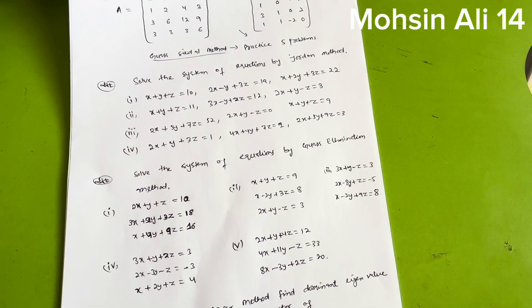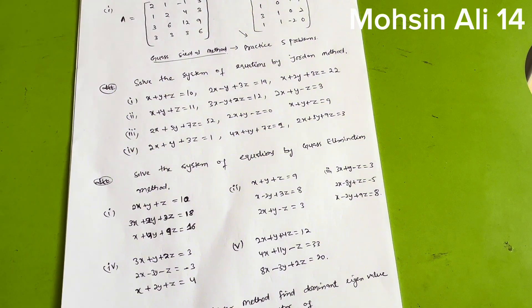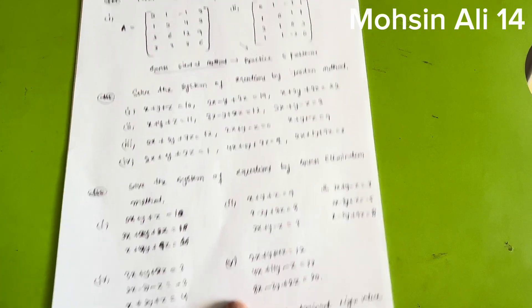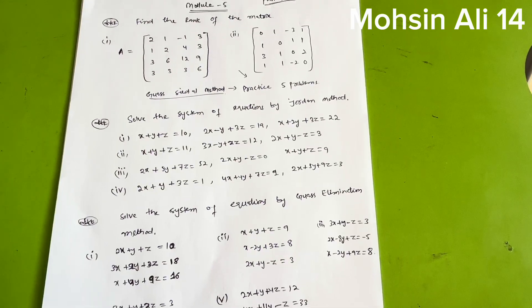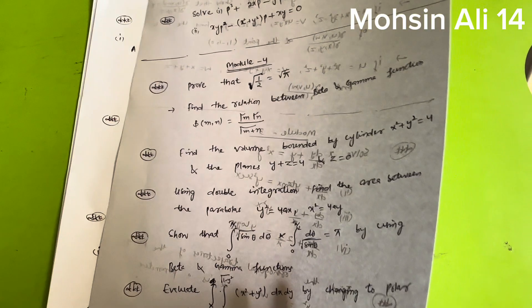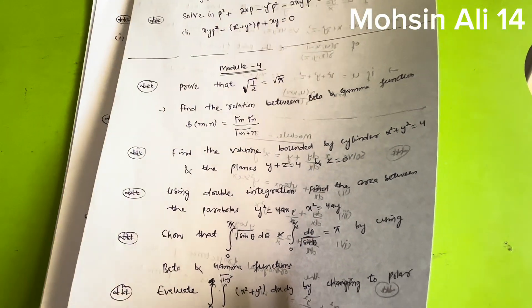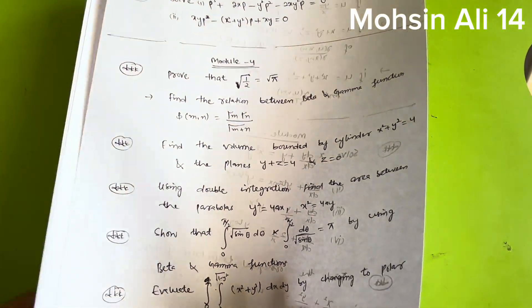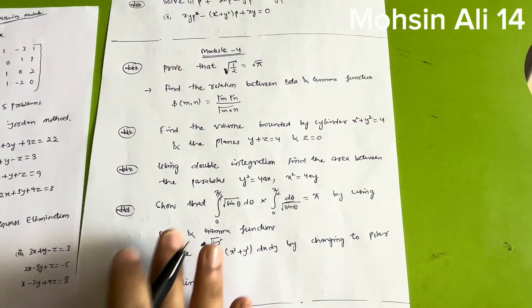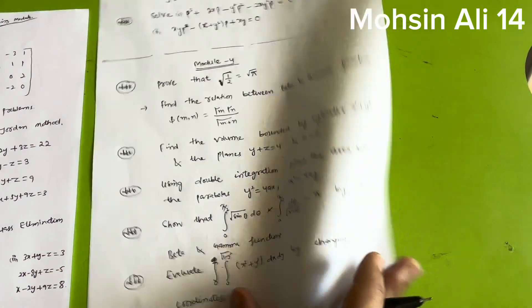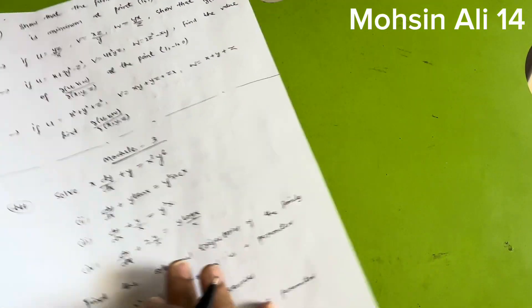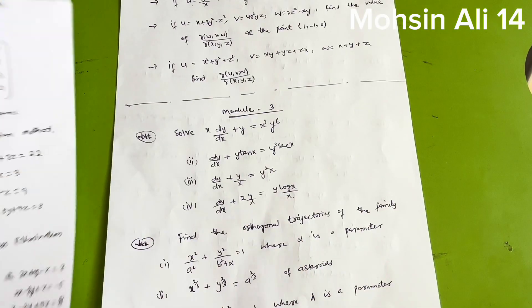This is all about Module five — you can easily score 20 marks in this module. Now let me discuss the remaining two modules, which I haven't included in the passing package but which you can study to score even higher in the Mathematics subject.